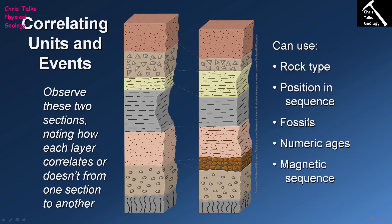We can also use the position of rocks in the sequence to work out whether they match. In our sequence we have a red sandstone followed by a gray mudstone, then a yellow sandy mudstone, then a breccia, then another red sandstone. At our second location we see the same sequence: red sandstone, mudstone, sandy mudstone, breccia, red sandstone. Because we have the same sequence in the same order at different locations, we can correlate layer to layer.